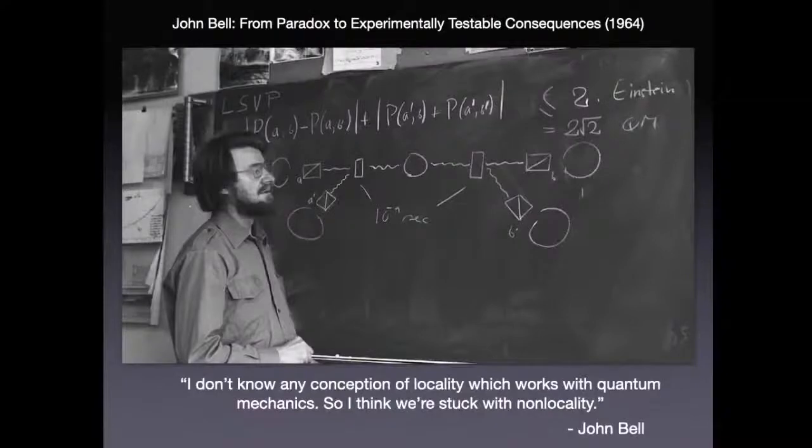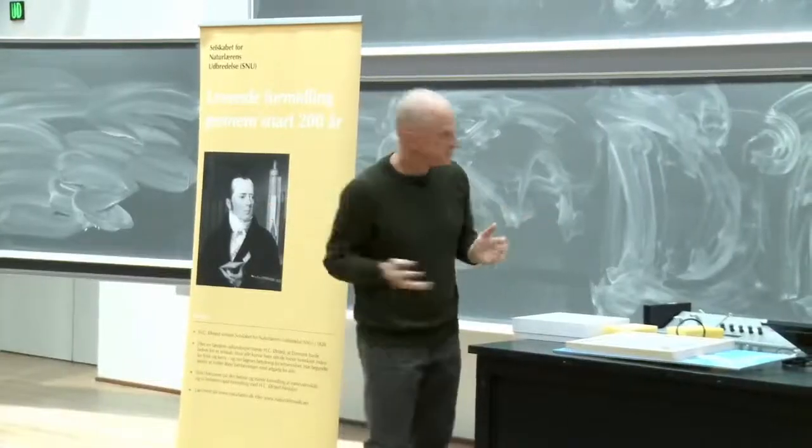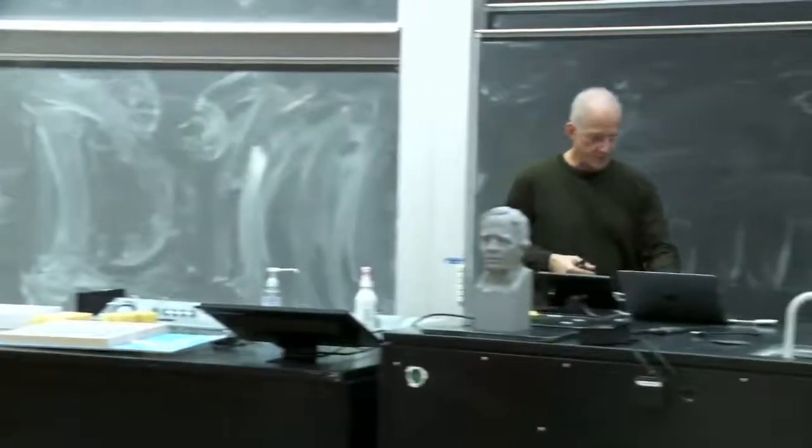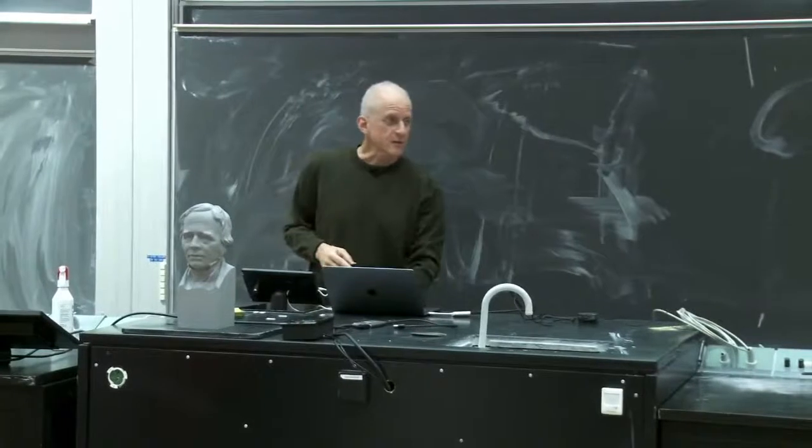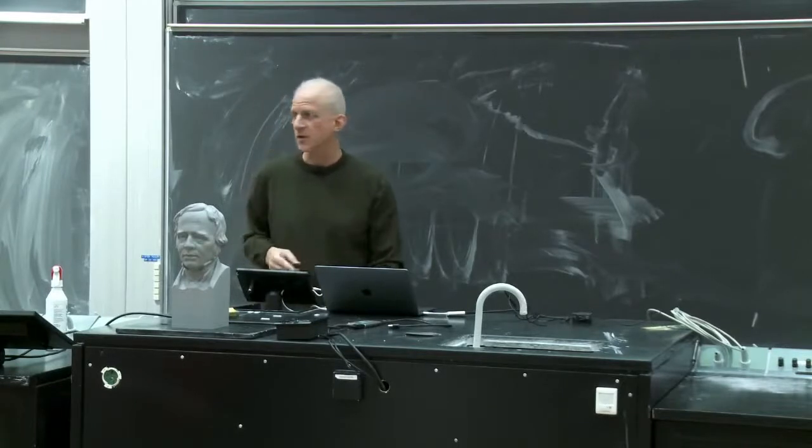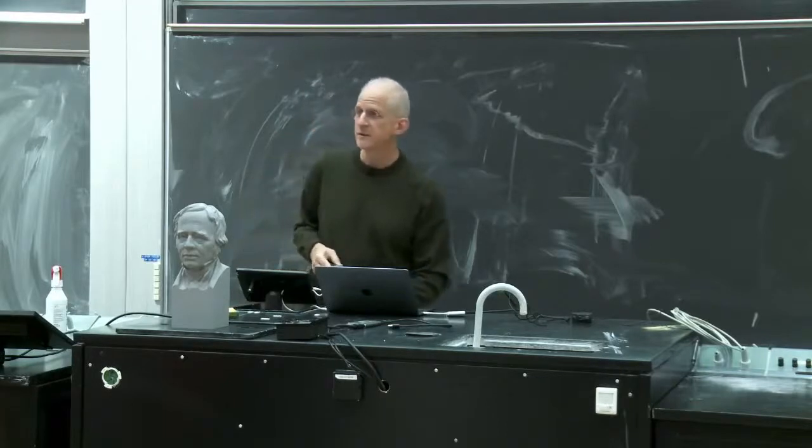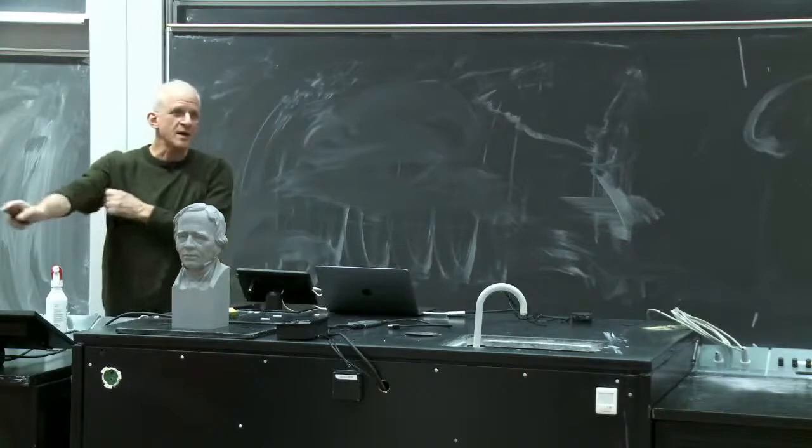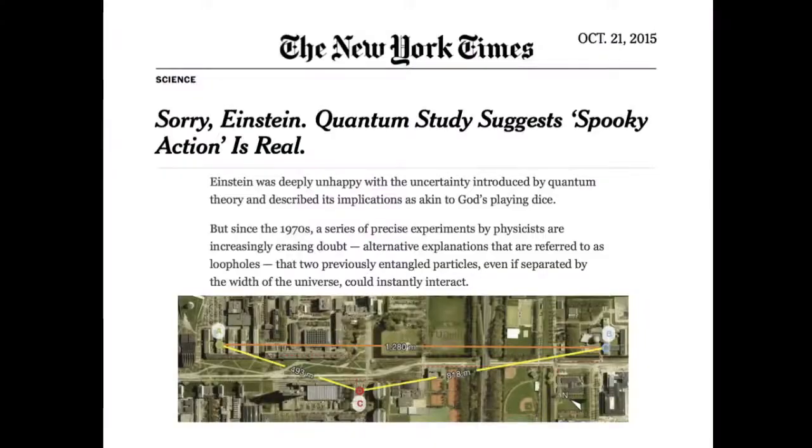If you're with Einstein that the story doesn't make any sense, that inequality has to be less than two if everything is a complete story. But quantum mechanics says it is definitely not less than two. So now it becomes a doable experiment. And if you read the quote from John Bell at the bottom, he says, I don't know any conception of locality, meaning that the properties of something are what you have in your hands. The properties can depend on something at the other side of the galaxy. I don't know any conception of locality which works with quantum mechanics. So I think we're stuck with non-locality. The world is a complicated place.